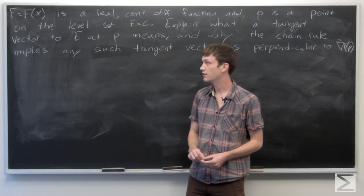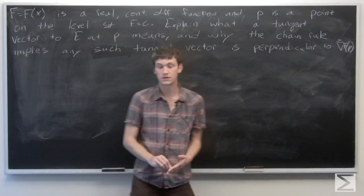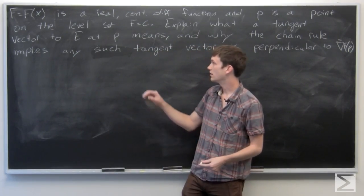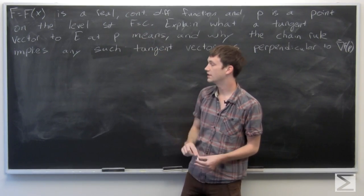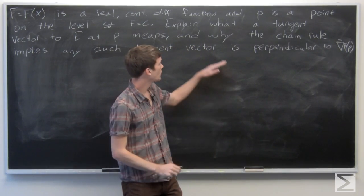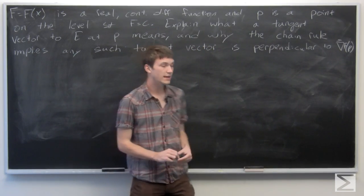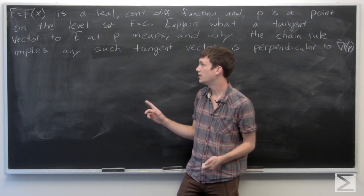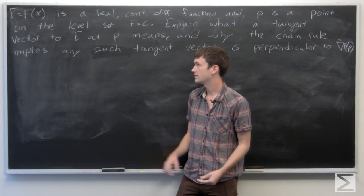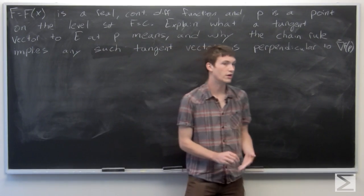In this problem, we're given that f of x is a real, continuous, differentiable function. And p is a point on the level set e, where f is equal to c. We want to explain what a tangent vector to e at p means, and then explain why the chain rule implies that such a tangent vector is perpendicular to the gradient vector of f at p.